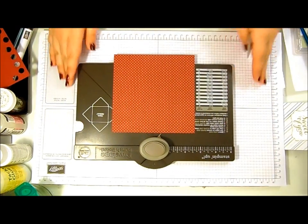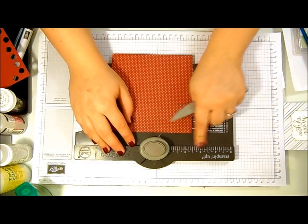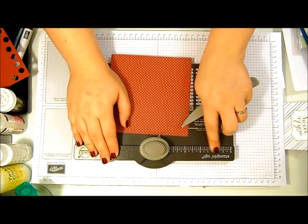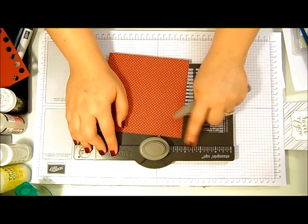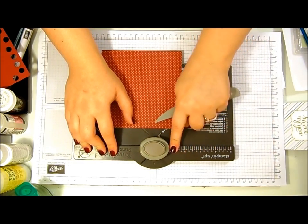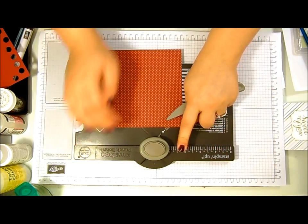I've purposely not done this in metric purely because the envelope punch board works best in imperial. These numbers here are much bigger. There are metric measurements underneath but I just find it much easier to use these imperial ones up at the top.